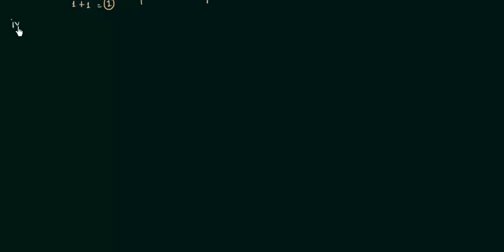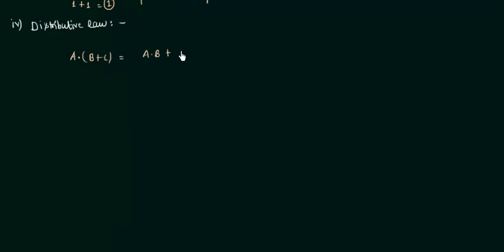Now we move to the fourth rule: the distributive law. This is one of the most important laws in Boolean algebra, and we will solve many problems depending on this rule. Every Boolean algebra problem in the exam will have this rule involved. We will see two forms: the first is a AND (b OR c) = (a AND b) OR (a AND c).